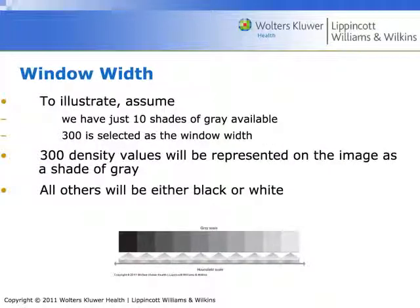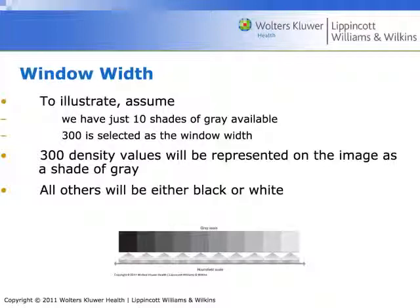Here is a representation of the grayscale as it relates to window width. Let's assume we just have 10 shades of gray available and 300 is selected as the window width. The 300 density values apparent in that image will be divided by 10, giving us 10 shades of gray. Everything else will be completely white or completely black.